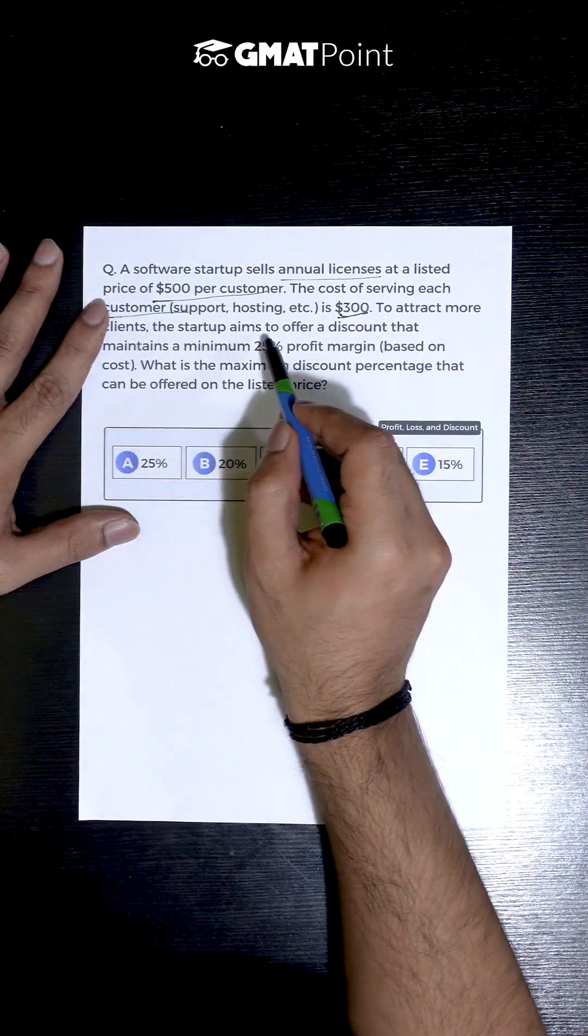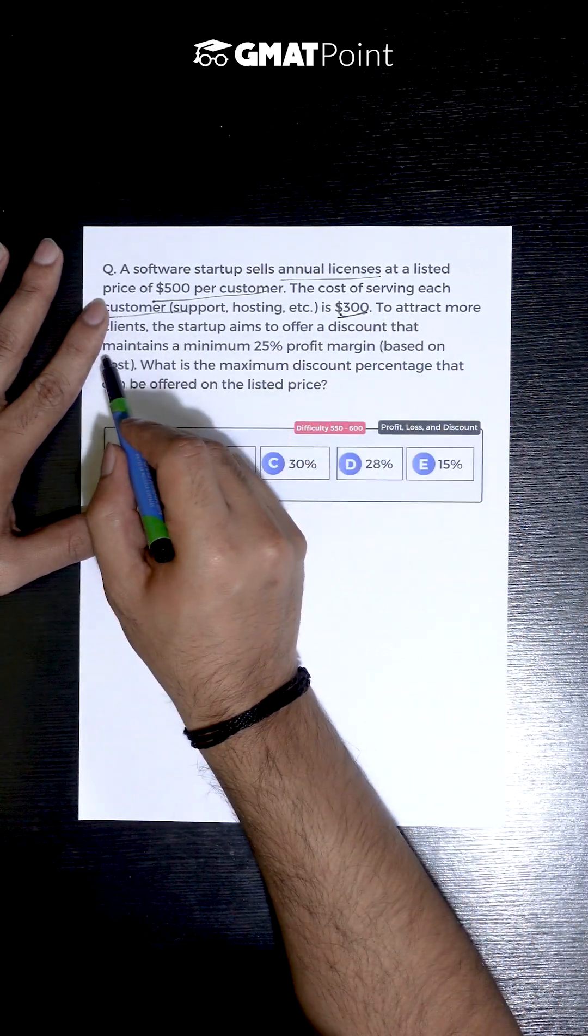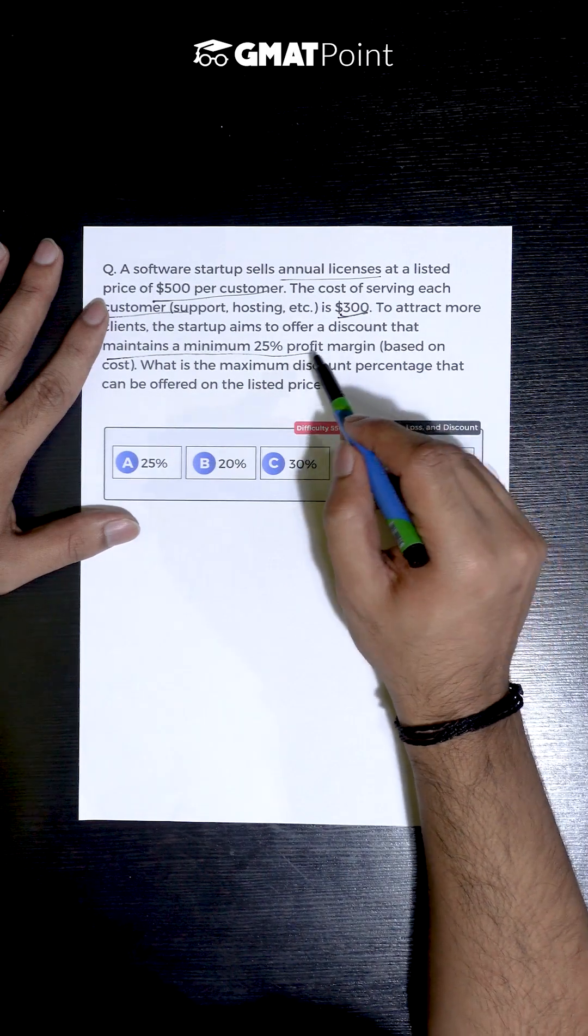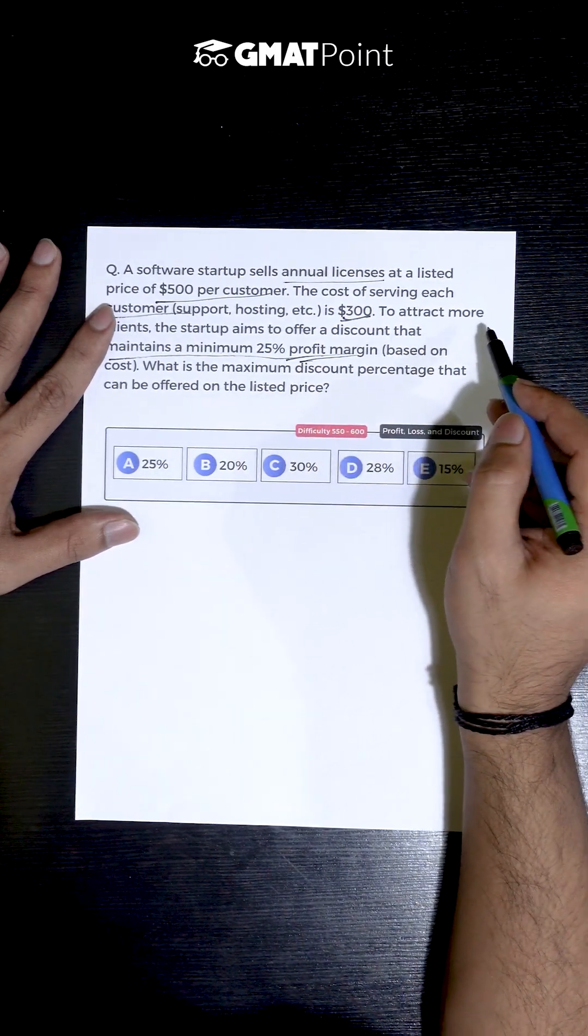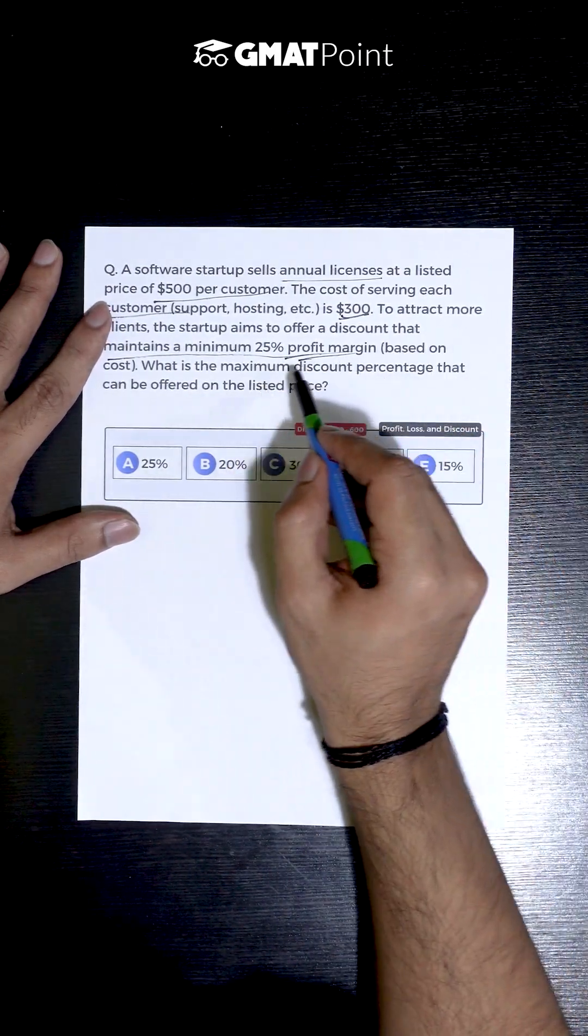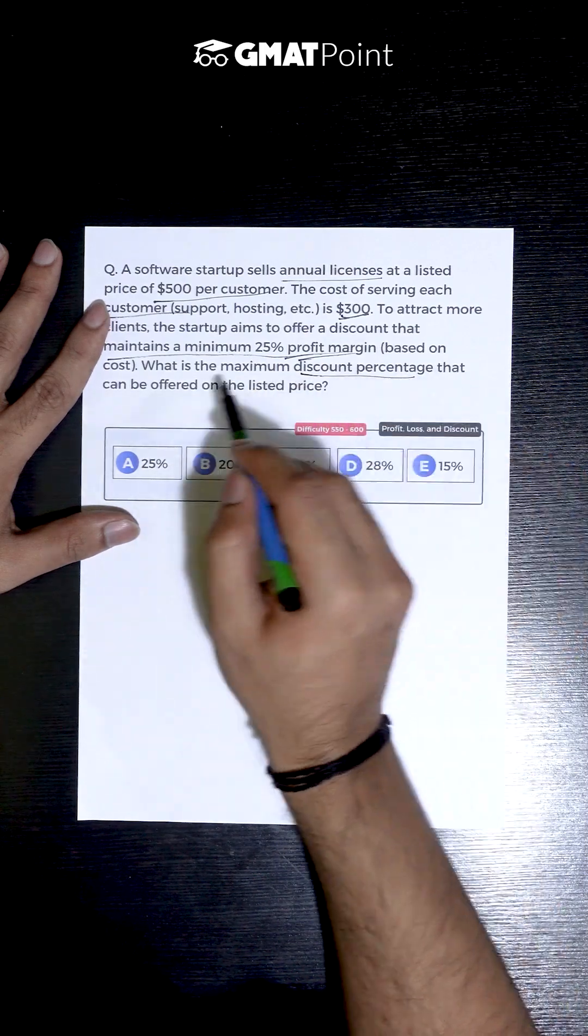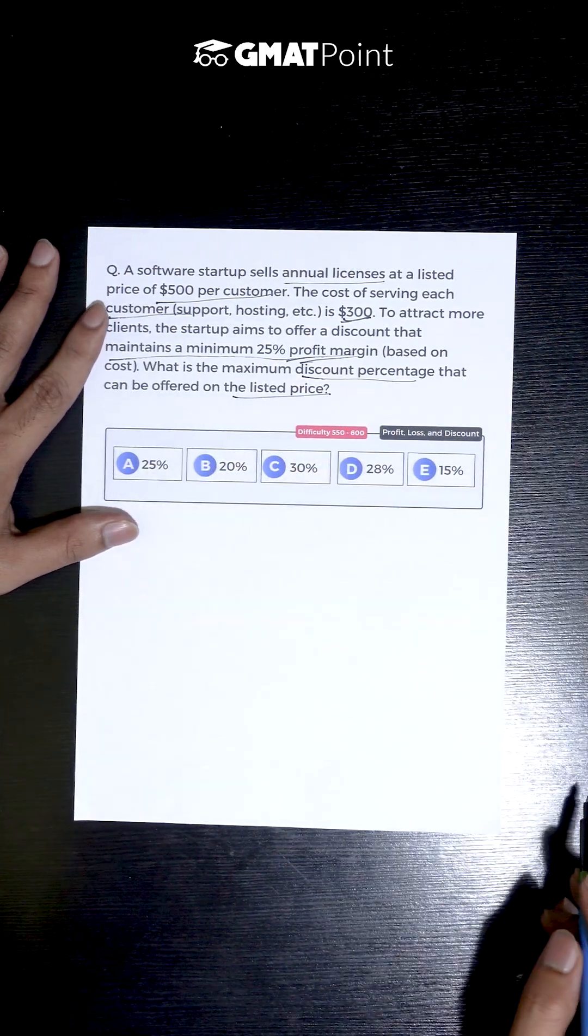To attract more clients, the startup aims to offer a discount that maintains a minimum 25% profit margin based on the cost. What is the maximum discount percentage that can be offered on the listed price?